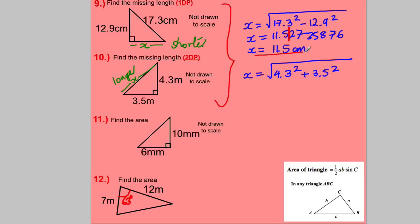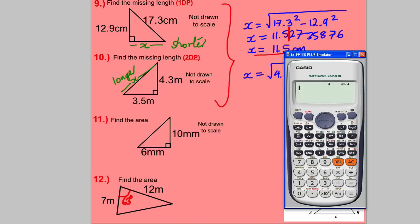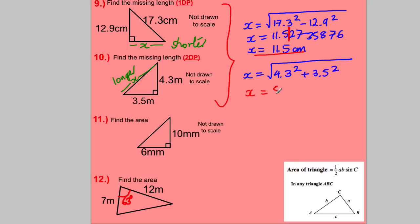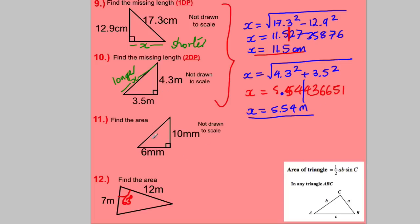For the longer side, we add: X = √(4.3² + 3.5²). Calculator: √(4.3² + 3.5²) = 5.544366... Rounding to two decimal places — the line is after the second decimal place, and the digit there is 4, so it doesn't change. X = 5.54 m.